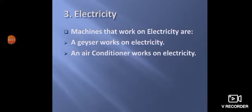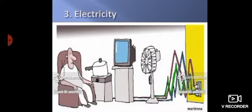Now third type of machine is electricity. Electricity machines ke examples kya hai? Jaisi geezer. Hamare washrooms mein jo geezer hoti hai. Woh electricity pe chalata hai. Air conditioners electricity pe chalata hai. Next we have some examples. You can see all these things like fan, television, then induction. All these run on electricity. I hope this is clear.